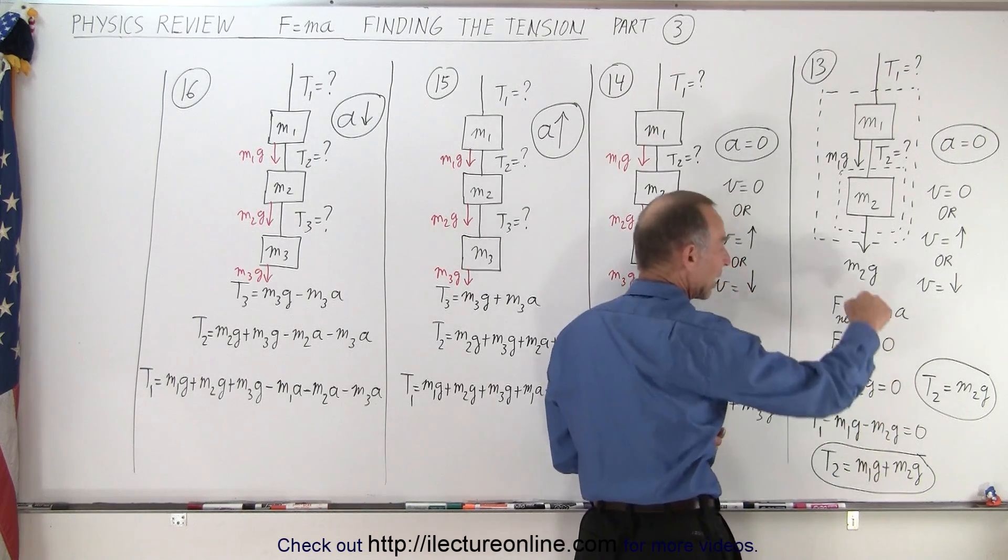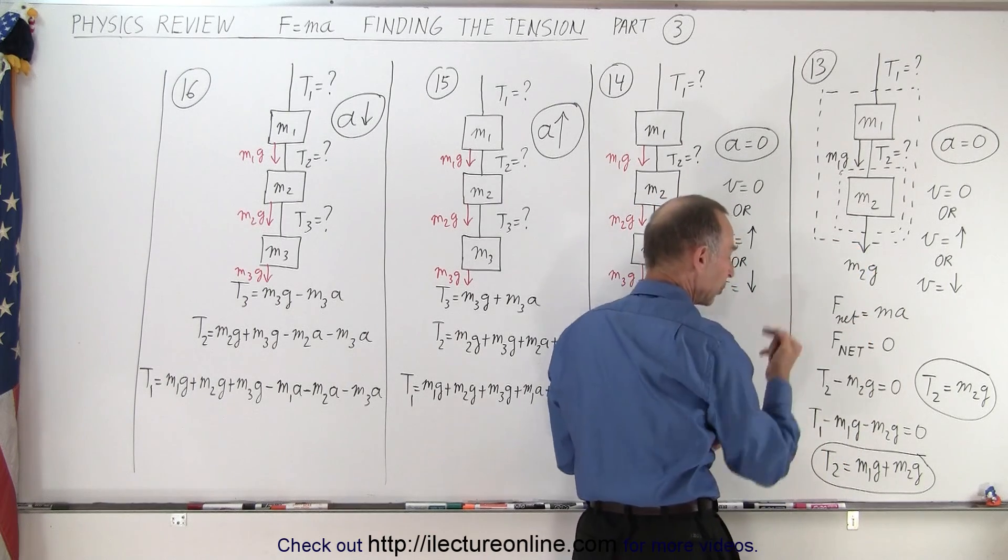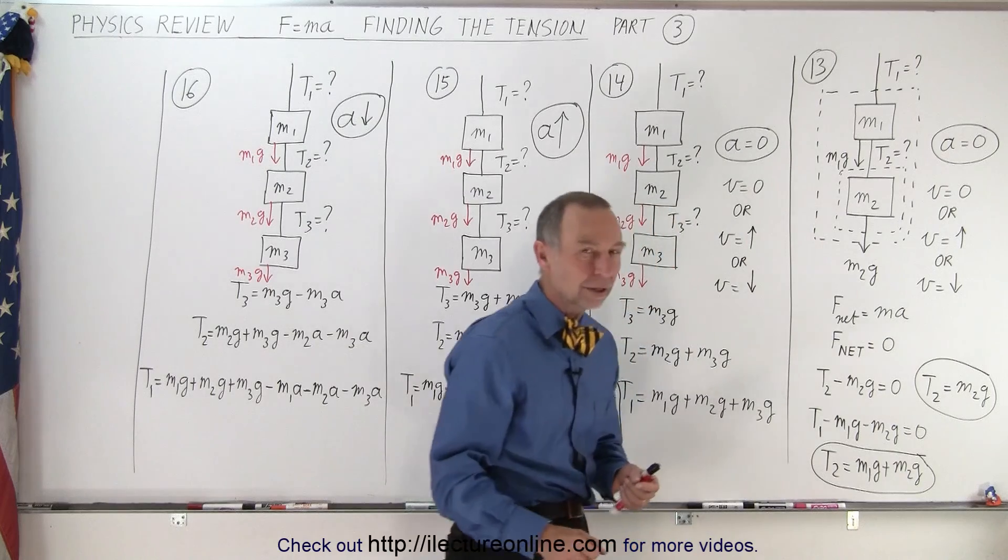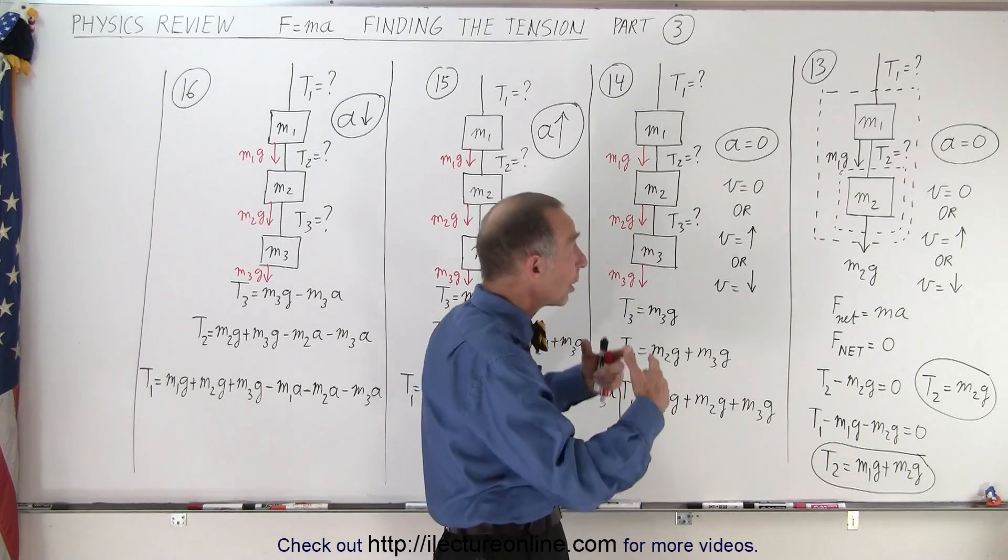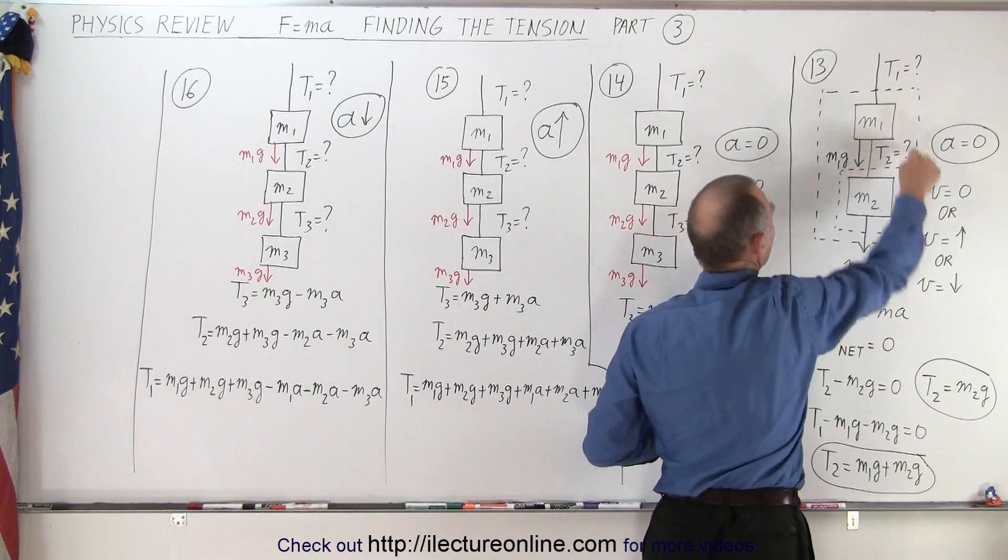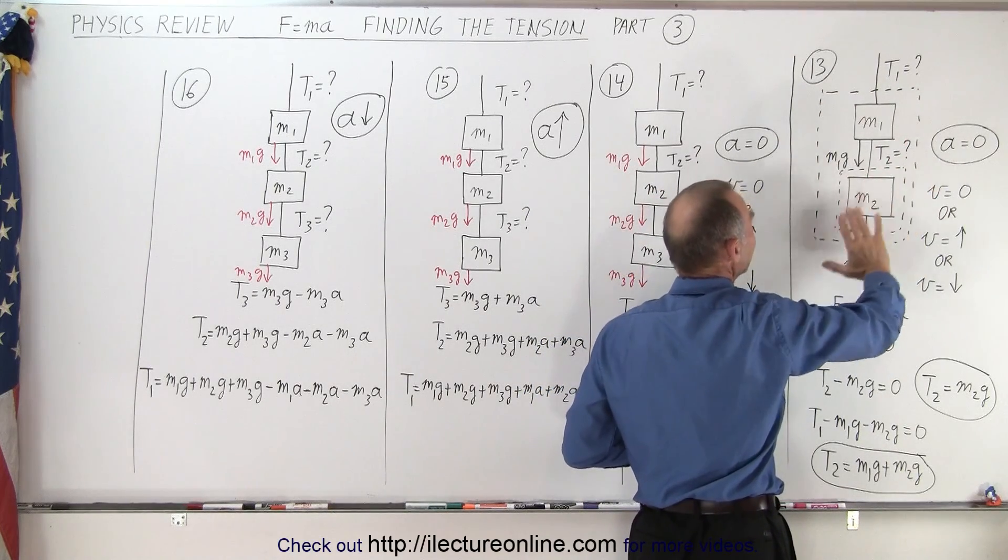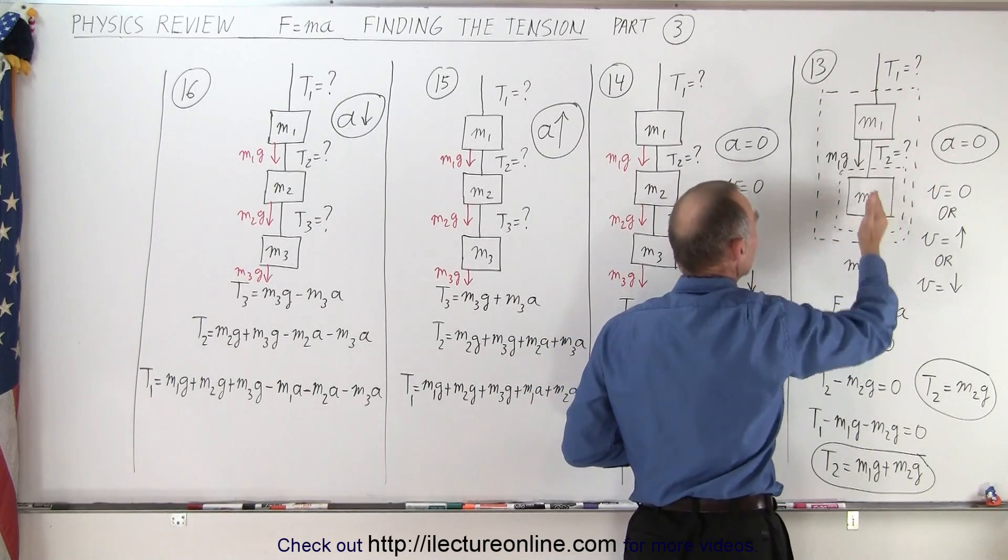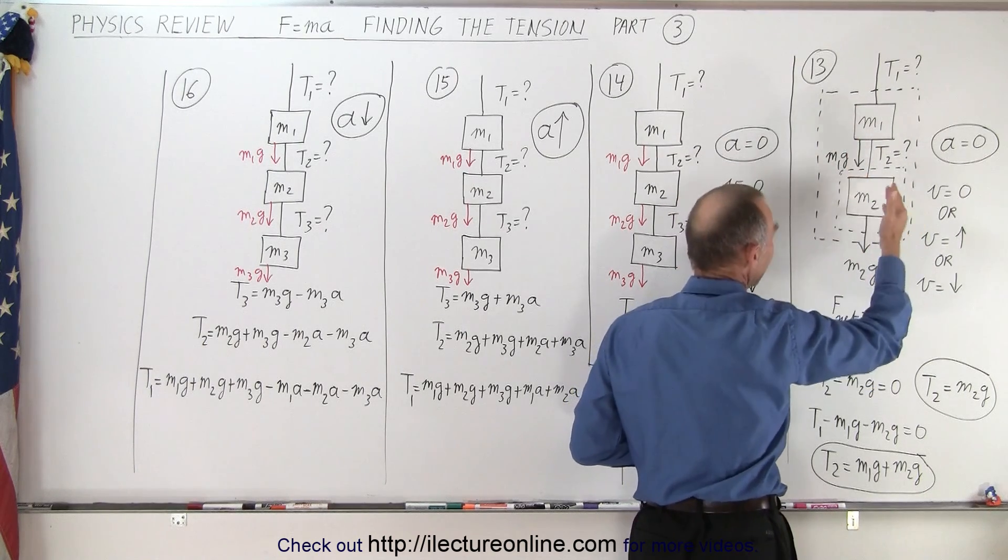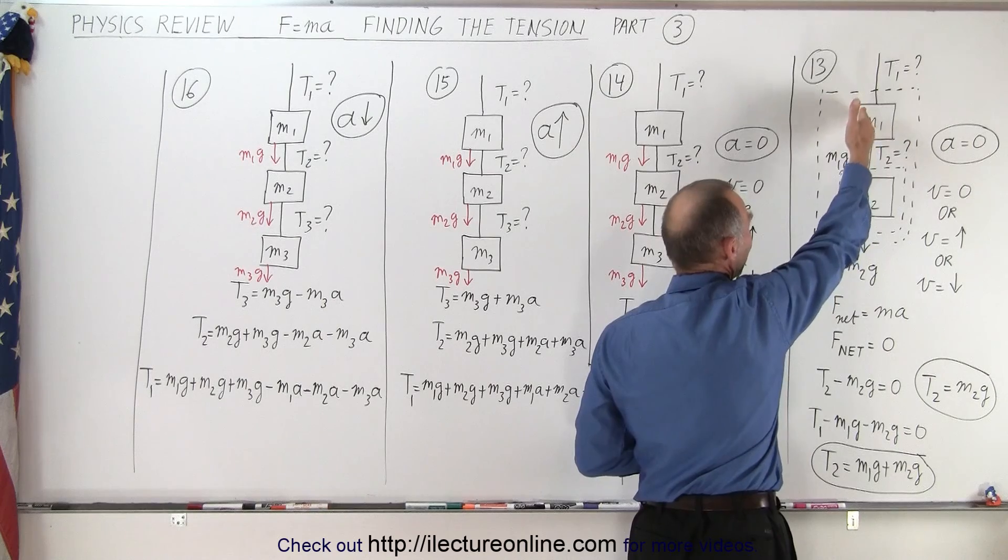Of course, you need to subtract these two because they act downward, and this one acts upward. So T1 is equal to the sum of the weight of the two objects. Then you may say, well, what about T2? Well, T2 is internal to this free body diagram, so we can ignore it. Anything inside we can ignore. It's just the forces acting on the object to the outside of the free body diagram, and essentially the weight of M1G.